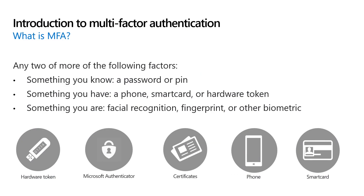Let's start with the fundamentals. Multi-factor authentication is a combination of two things: something you know, something you have, and something you are. Something you know is most commonly a password or PIN. Something you have can be a phone, smart card, or hardware token. And something you are is typically a biometric, such as your face or fingerprint.